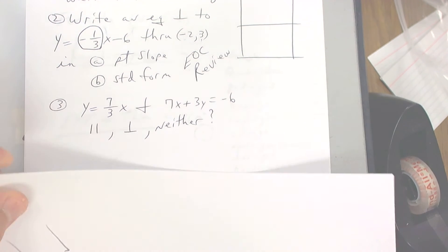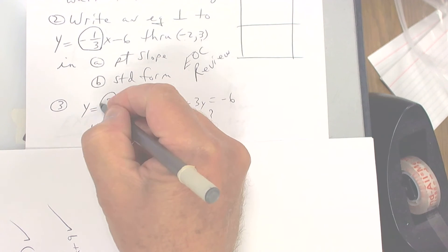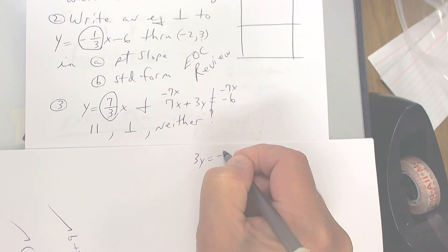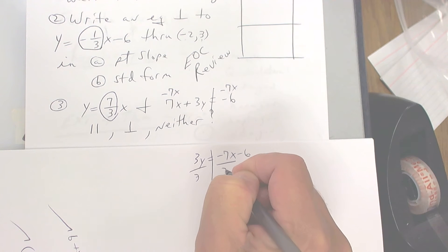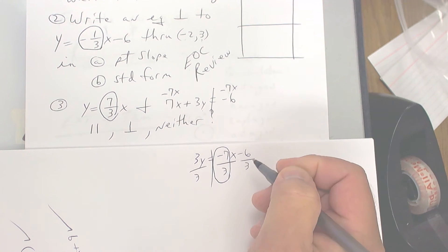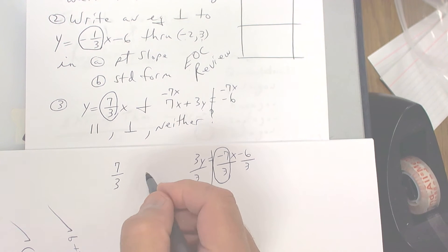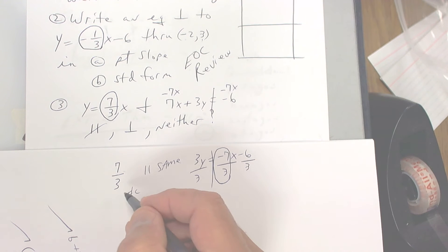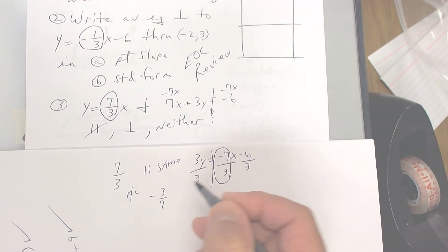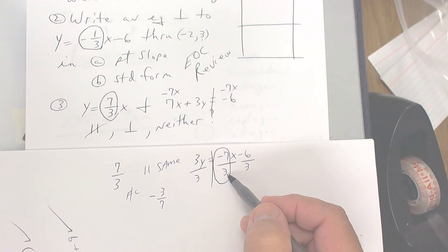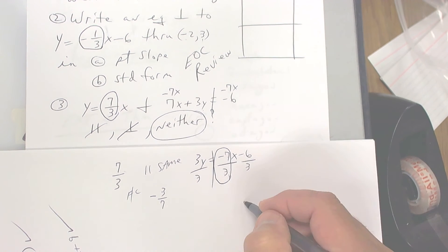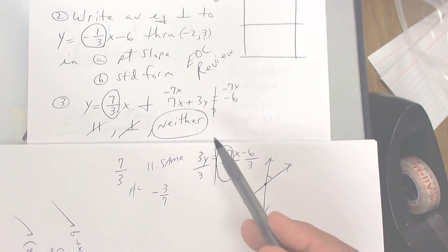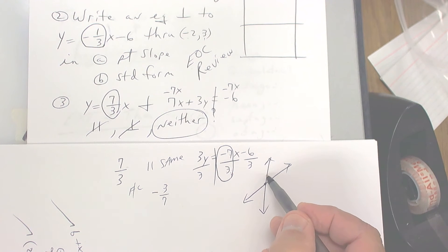Here's another one — are these lines parallel, perpendicular, or neither? This one's your slope, so get y by itself: subtract seven x from both sides to get three y equals negative seven x minus six, then divide by three. So the first slope is seven over three. If it were parallel it would be the same slope — it's not. To be perpendicular, you'd flip-change: it would need to be negative three over seven. It's not that either, so this is neither — the lines intersect but not at 90 degrees.